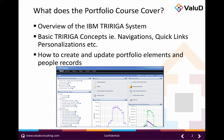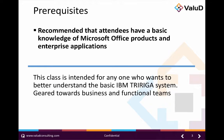This course also provides information about creating and updating portfolio elements, including location hierarchies, geographies, assets, and people records. This course is perfect for anyone who wants to better understand the basic IBM TriRiga system navigation and work with the portfolio data, including people, organizations, and locations.